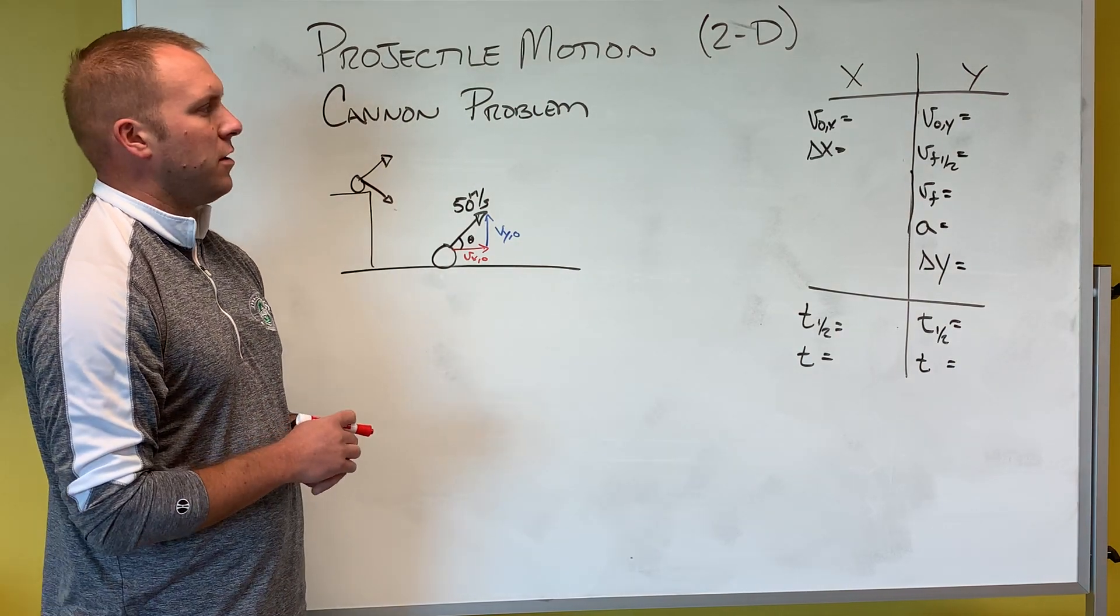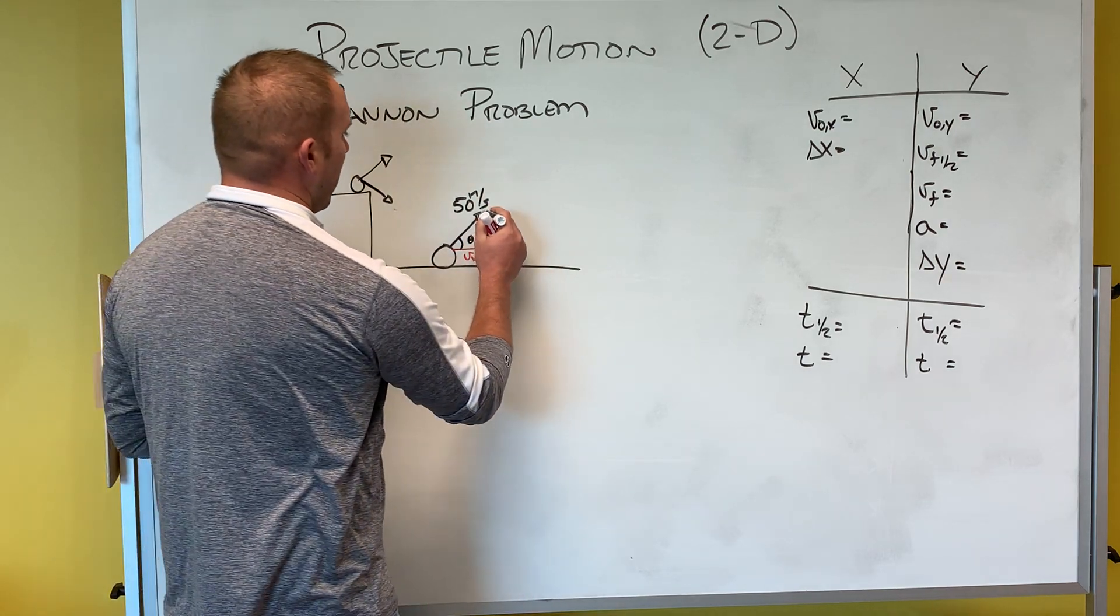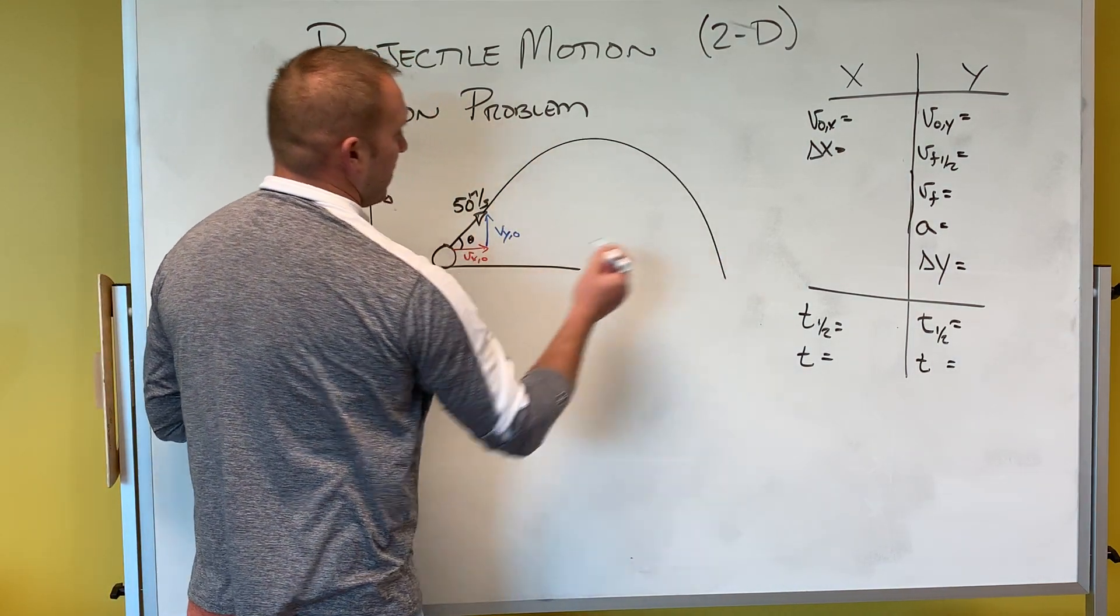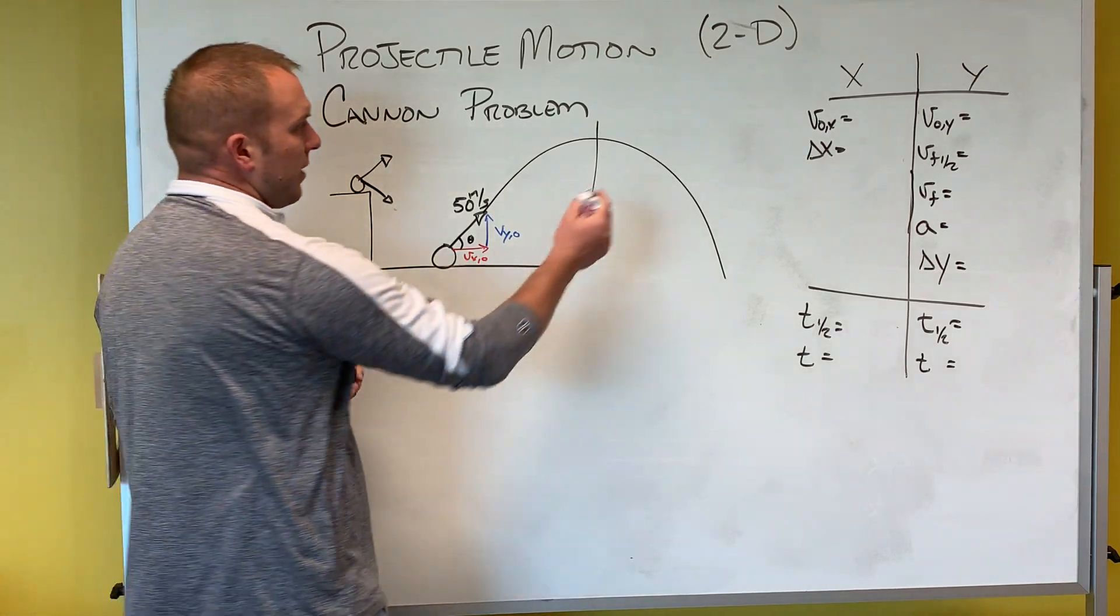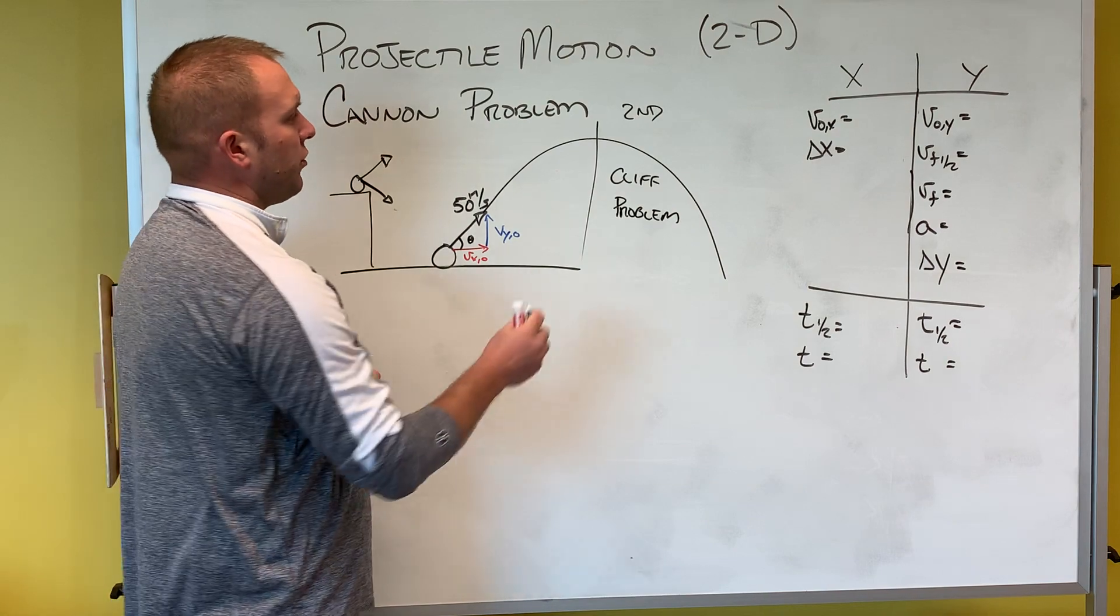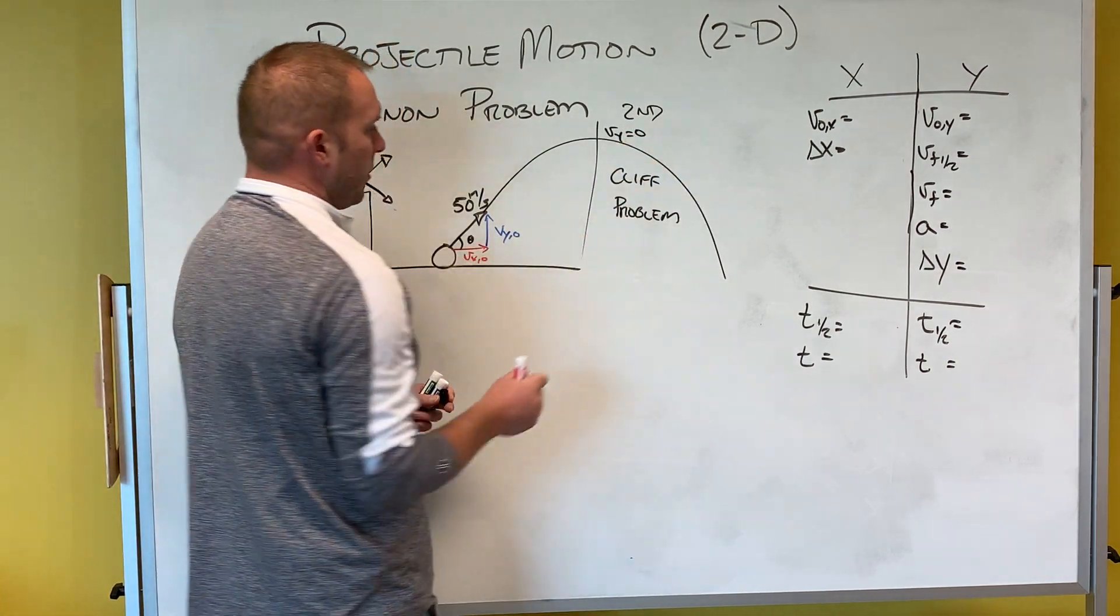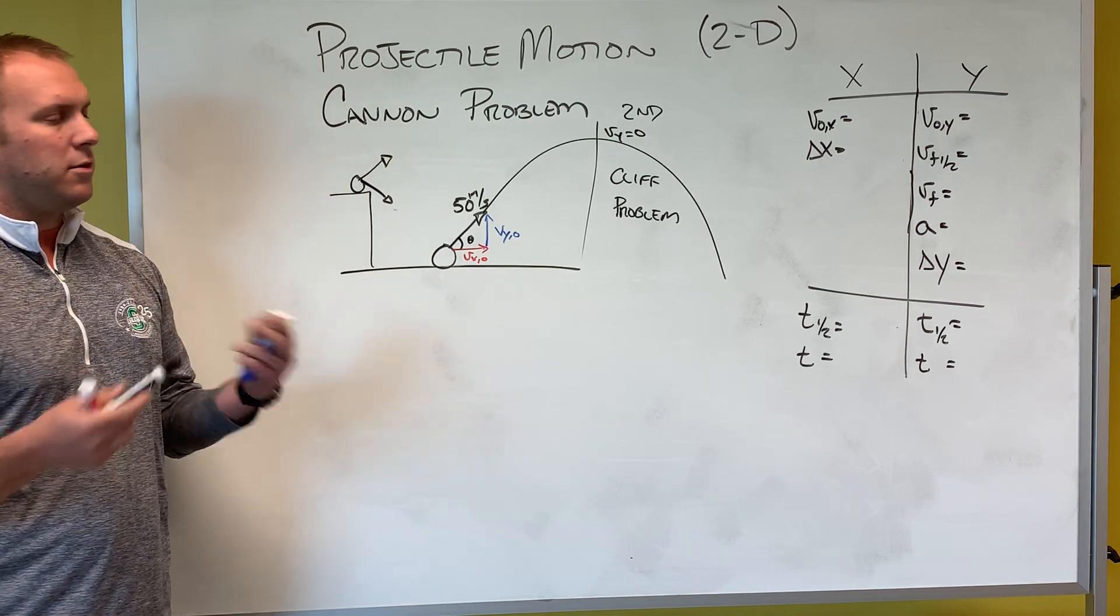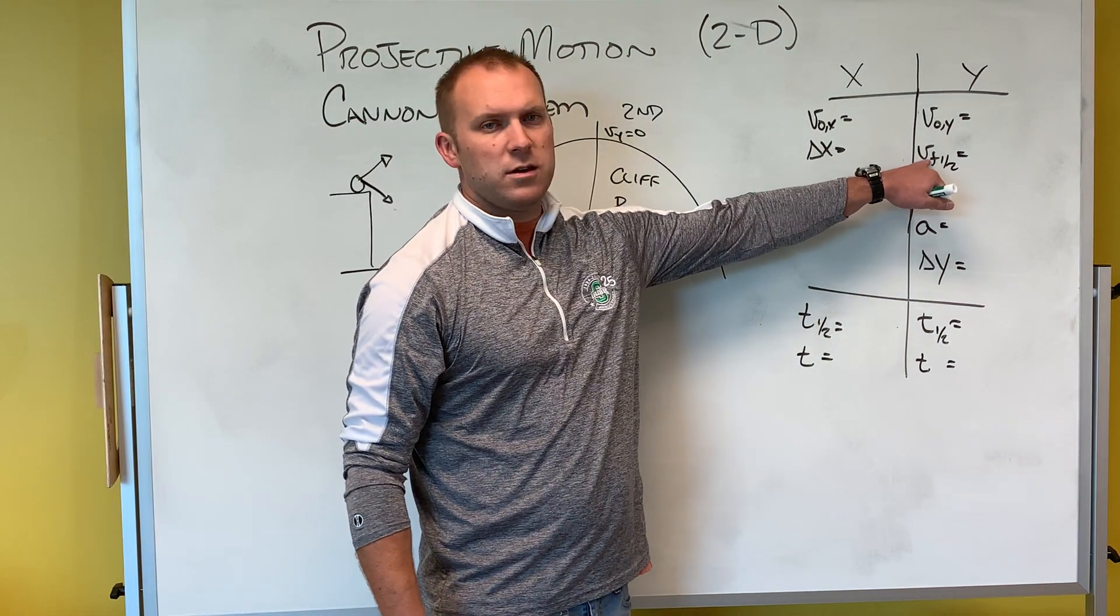This is going to look a little different in the fact that when we're looking at projectile motion, sometimes when it looks like this, if we essentially just stop it there, this second part is a cliff problem. We're at the very top of my motion, my velocity in the y direction is zero.